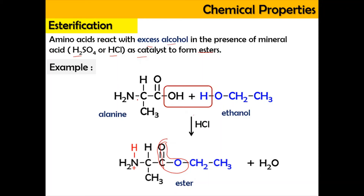At the same time, the NH2 group refers to the amine group which is basic. When a base reacts with an acid, the base takes up a hydrogen and this part is protonated to form NH3+. So the amino acid undergoes esterification at the carboxylic end, while the basic amine part also reacts with the acid to become protonated. This is very critical because many students forget about this — ensure that you protonate the amine part.